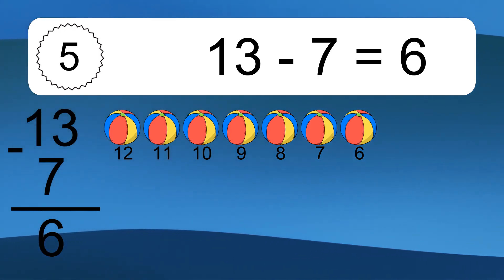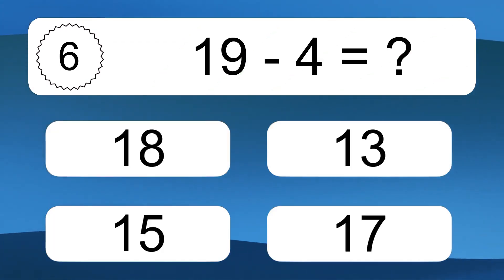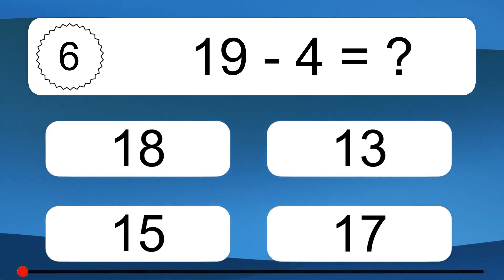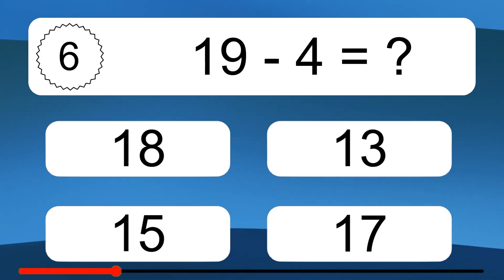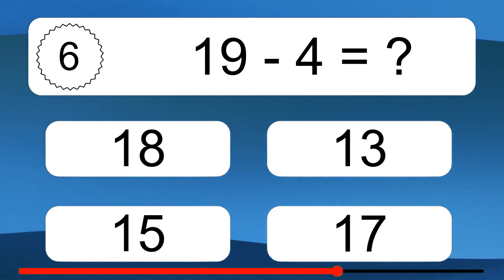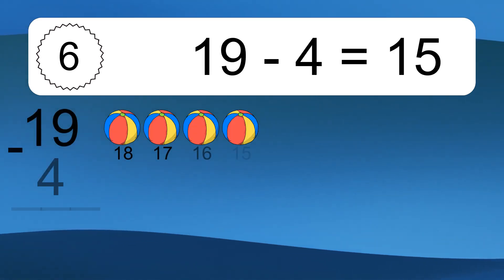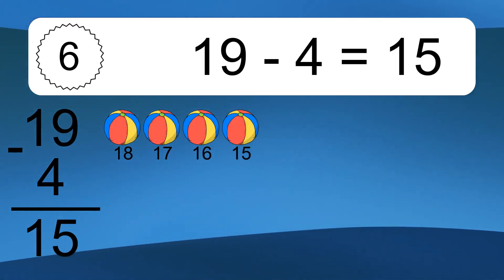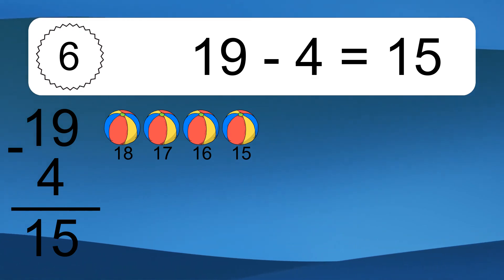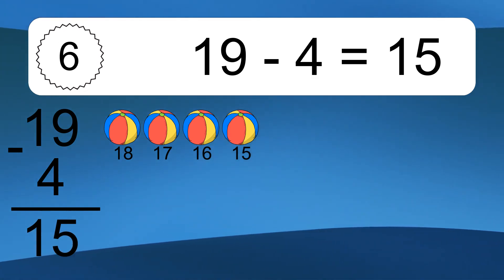19 minus 4 equals what? 19 minus 4 equals 15. Let's count it. 18, 17, 16, 15.